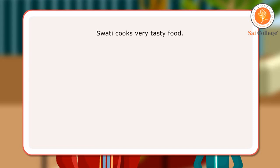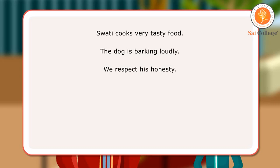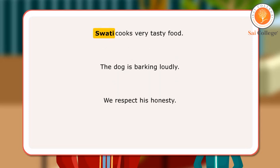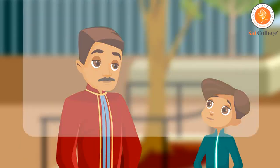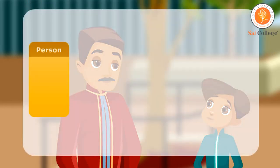Let us look at a few sentences. Swati cooks very tasty food. The dog is barking loudly. We respect his honesty. In the first sentence, Swati and food are nouns as they denote a person and a thing respectively. In the second sentence, dog is a noun as it is the name of an animal. In the third sentence, honesty is a noun as it denotes a quality.